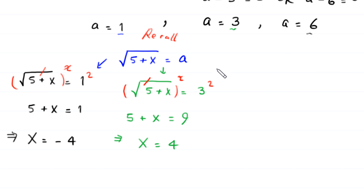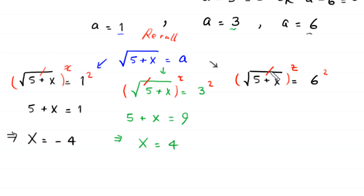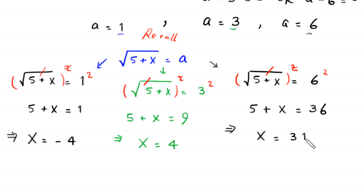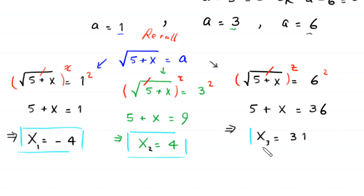When a equals 6, square root of 5 plus x equals 6, squaring both sides gives 5 plus x equals 36, so x equals 31. So we have three solutions for this equation: x equals negative 4, x equals positive 4, and x equals 31.